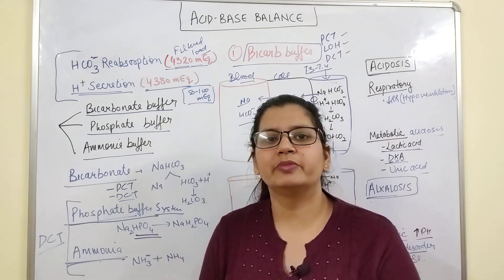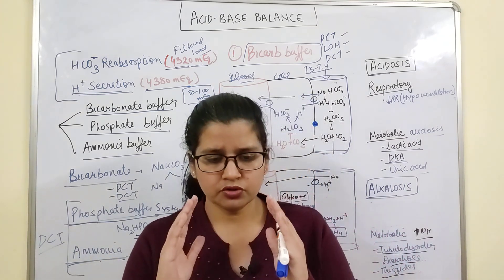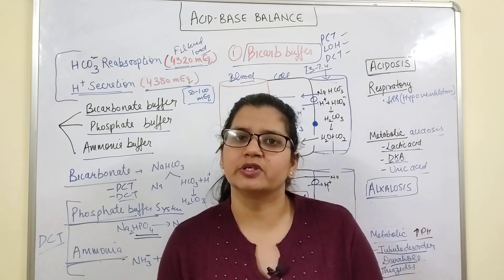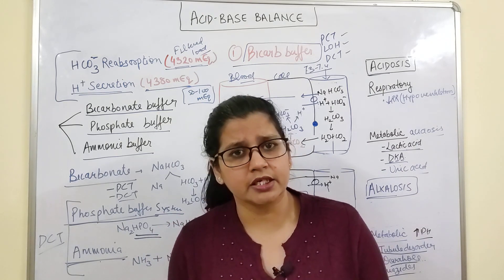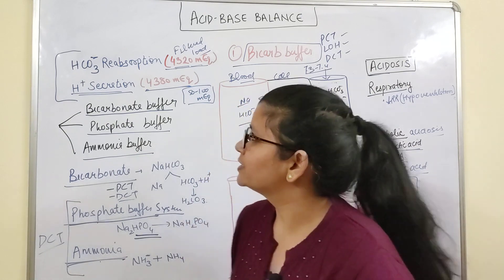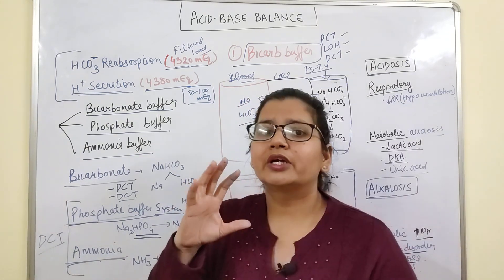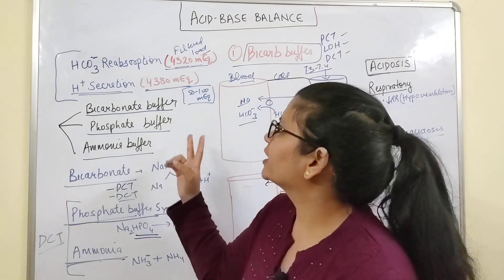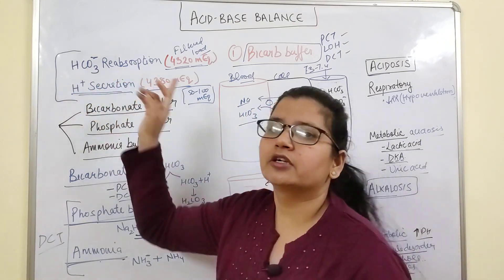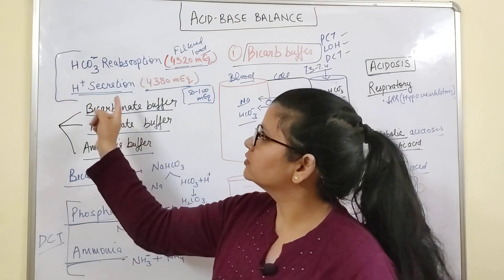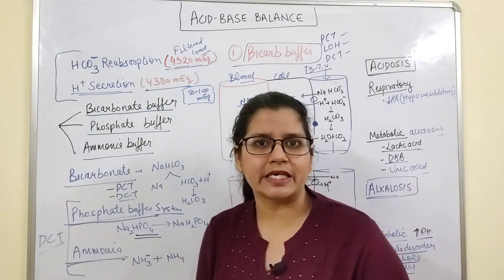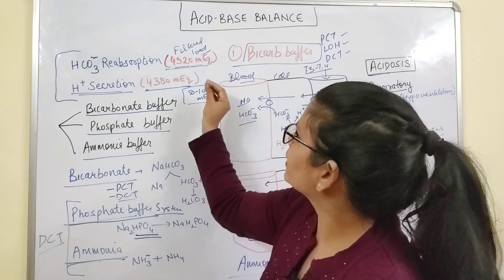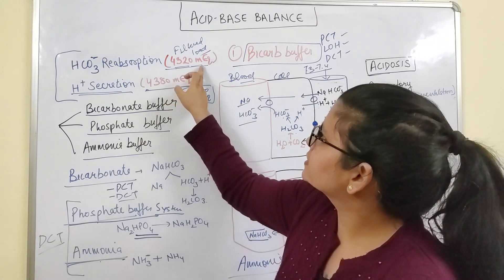The last buffer system is the renal buffer system, which we'll discuss in this video. Whether the question asks about renal buffer system, renal acid-base balance, or acid-base balance by kidney, the answer is the same. The kidney prevents acidosis by two mechanisms: bicarbonate reabsorption and H+ secretion.